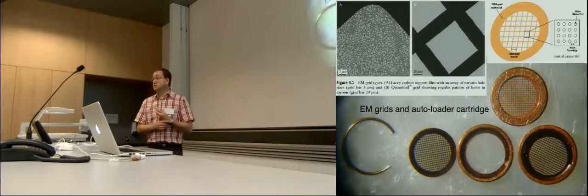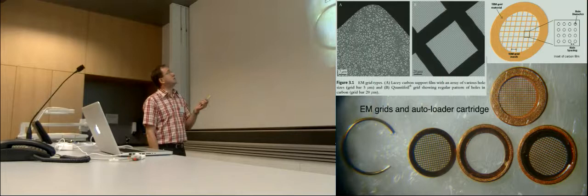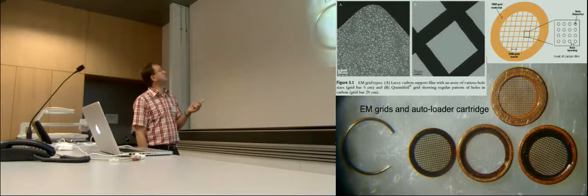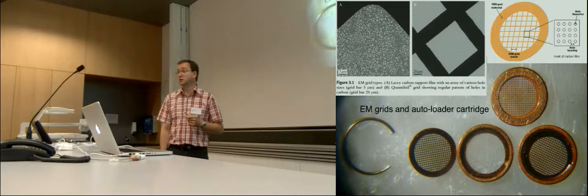You need grids. So I go a little bit through technical things. You can see that you can have different grids. Mainly there are, you can have lacy carbon films on these grids, or you can have an area of holes with these Quantifoil grids. And every square has one area with many holes. And in each hole you want to have your sample.